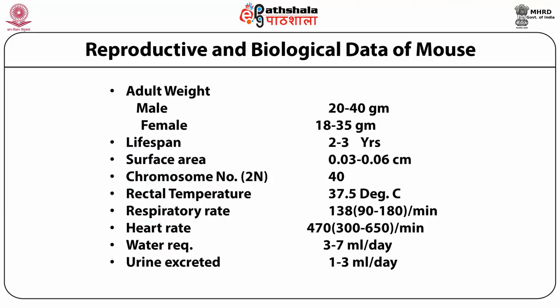Reproductive and biological data of mouse: adult weight is 20 to 40 grams, with typical maximum weight of 25 grams. Lifespan is 2 to 3 years. Body surface area is 0.03 to 0.06. Chromosome number is 40. Rectal temperature is 37.5°C. Respiratory rate averages 138 breaths per minute, up to 180. Heart rate is 470 beats per minute — much higher than the human rate of 72 to 80. Water intake is 3 to 7 ml per day and urine output is 1 to 3 ml per day.